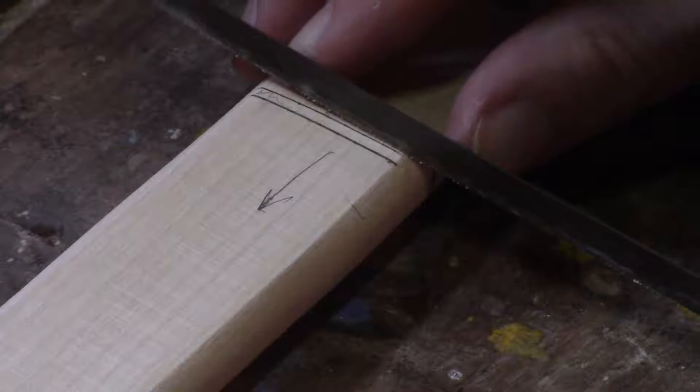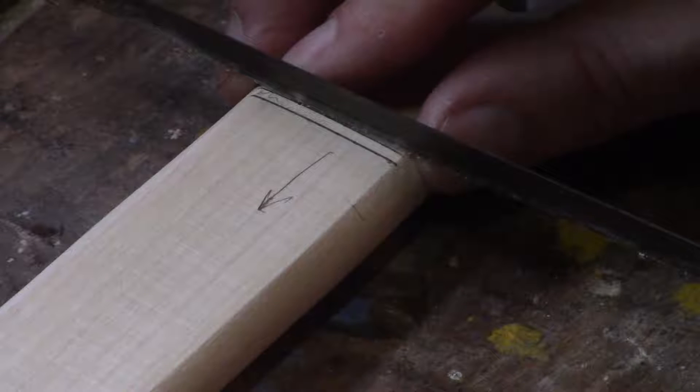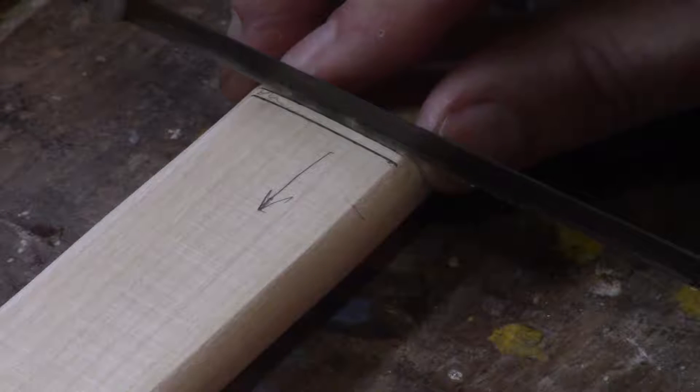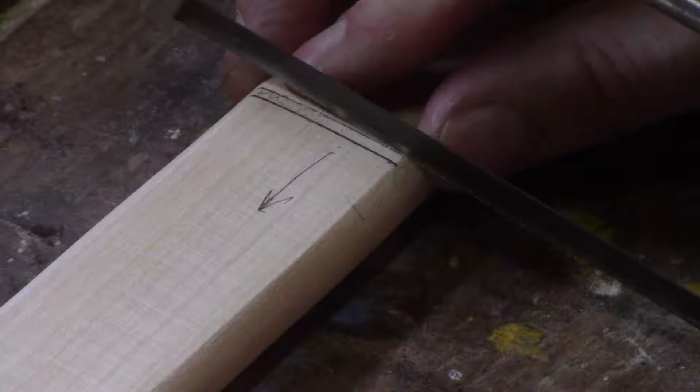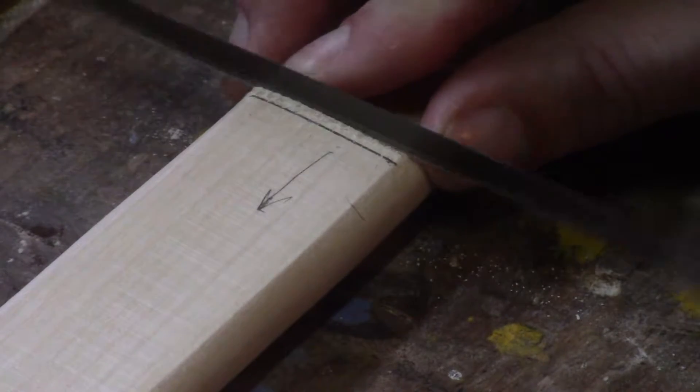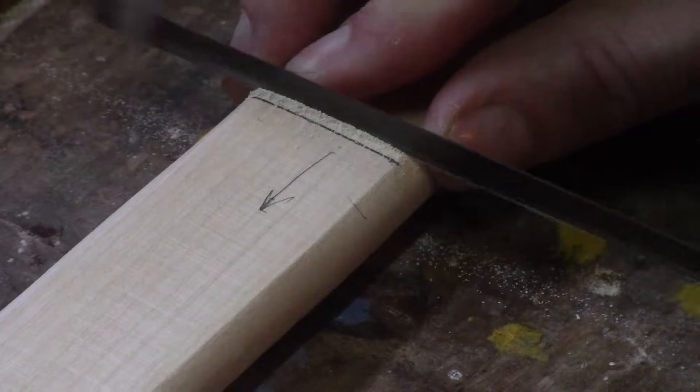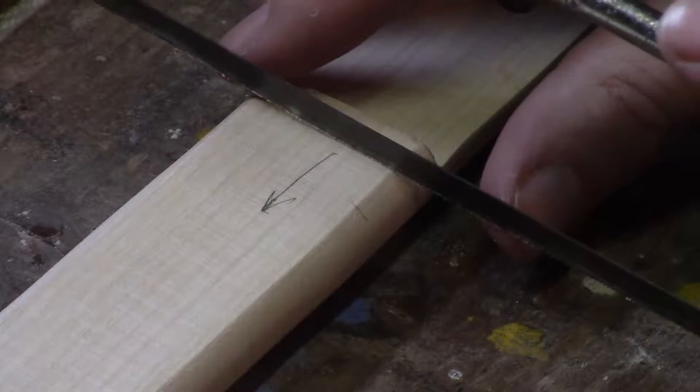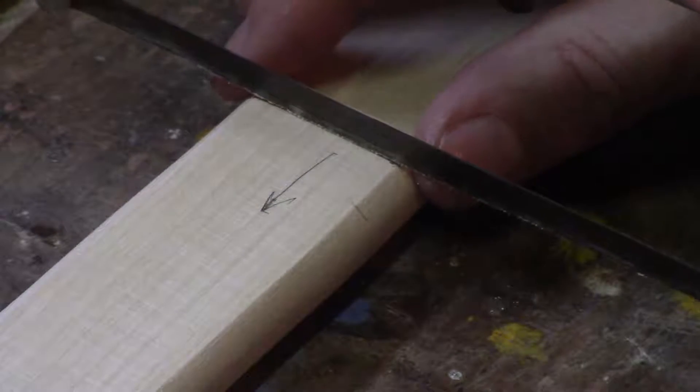So we'll just make these cuts with our hacksaw now. Again, it doesn't have to be perfect, just follow your line. And we've just gone down a small amount, just about a millimeter or two, just to mark the line.